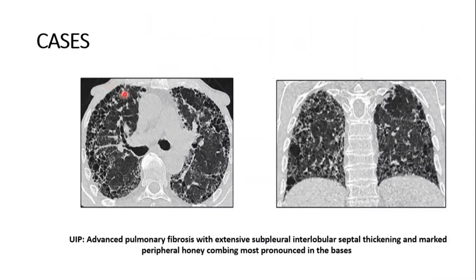The first case is usual interstitial pneumonia. The classical CT findings in usual interstitial pneumonia are presence of reticular opacity with honeycombing, with or without traction bronchiectasis. All should show subpleural and basal predominance. This case demonstrates the presence of honeycombing with peripheral reticular opacity, which is subpleural and basal predominant, which is typically present in UIP pattern.